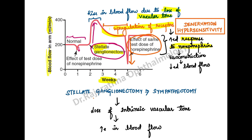That explains the entire graph — that is denervation hypersensitivity due to upregulation of the receptors. Stellate ganglionectomy is equivalent to a sympathectomy: there is a loss of intrinsic vascular tone and an increase in blood flow, but subsequently you get denervation hypersensitivity and an increased response to norepinephrine. This graph best explains denervation hypersensitivity.